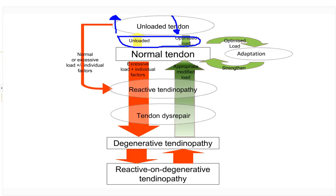If we have a normal tendon and place excessive load on it — plus individual factors — we can drive it into reactive tendinopathy. That's the cell response I was talking about. But notice this green arrow — this is a reversible process, completely reversible. If we can modify the load at this point, we can completely revert this tendon to normal. That's a really important one for us to pick up clinically.